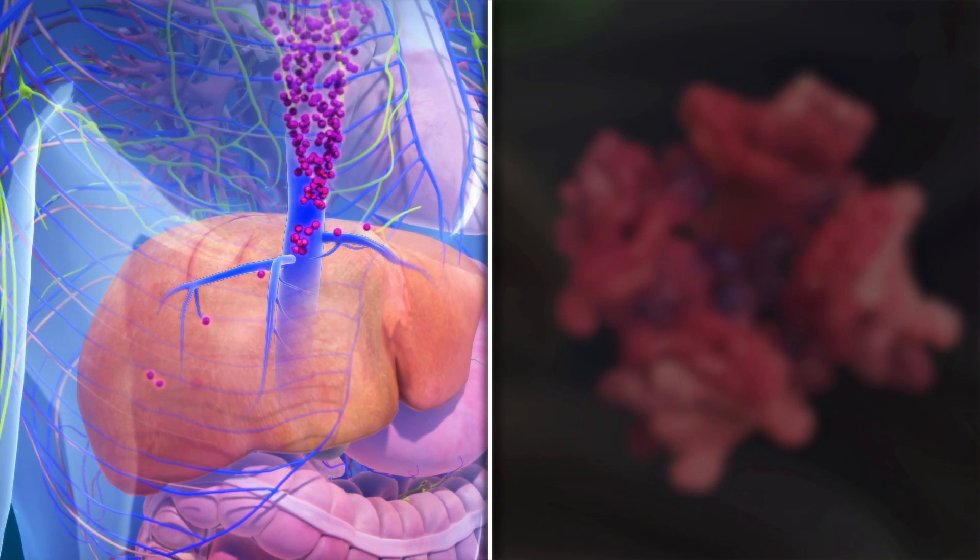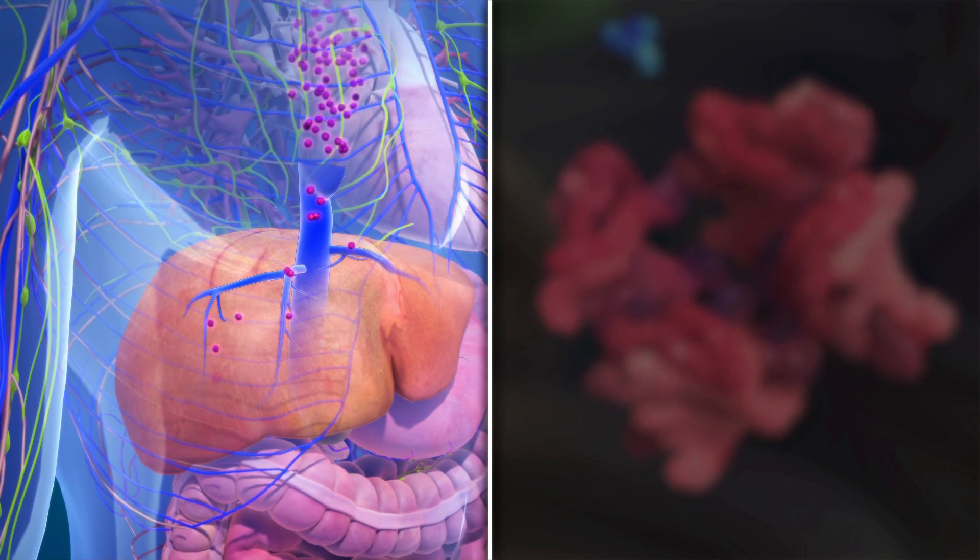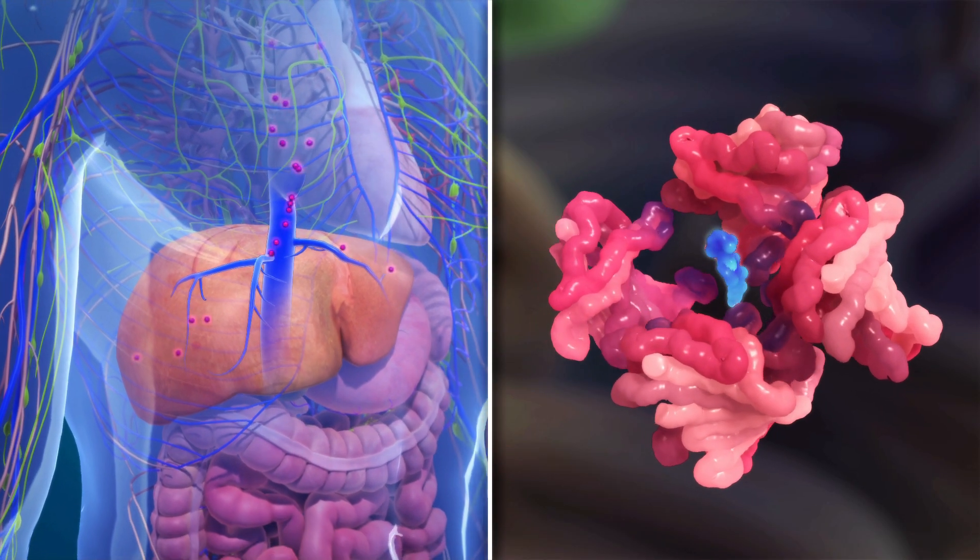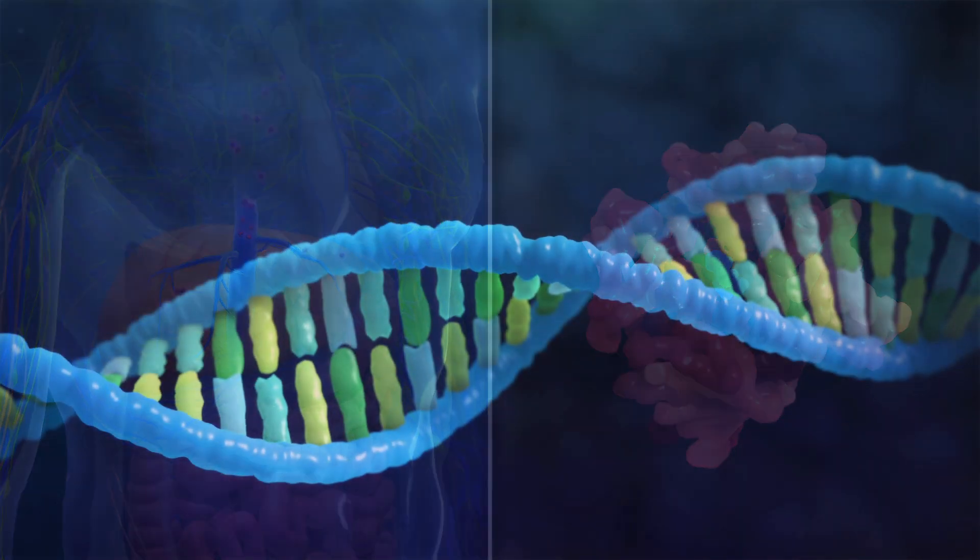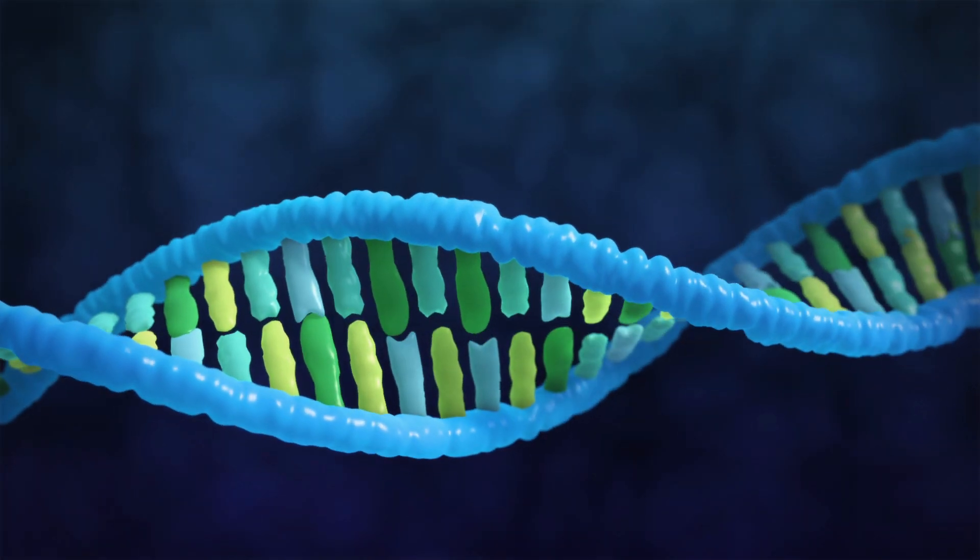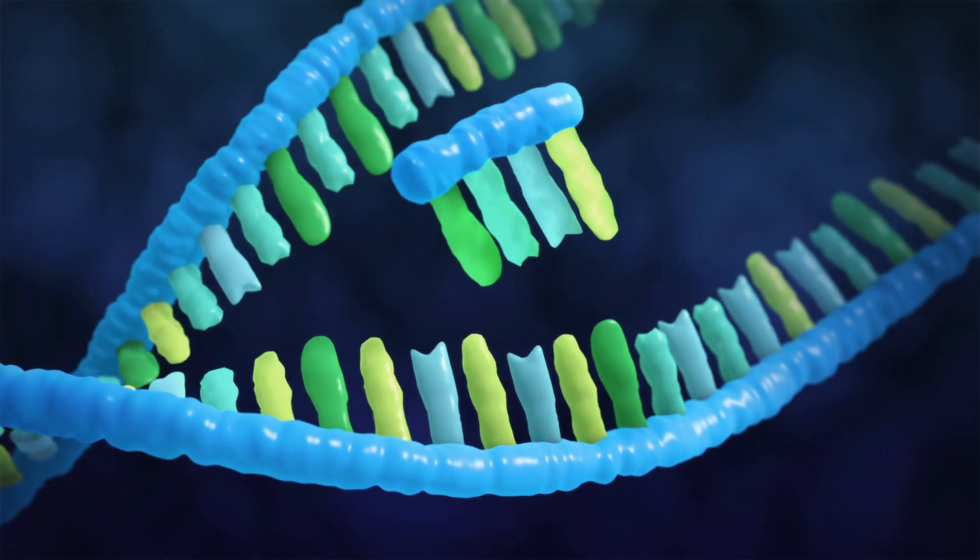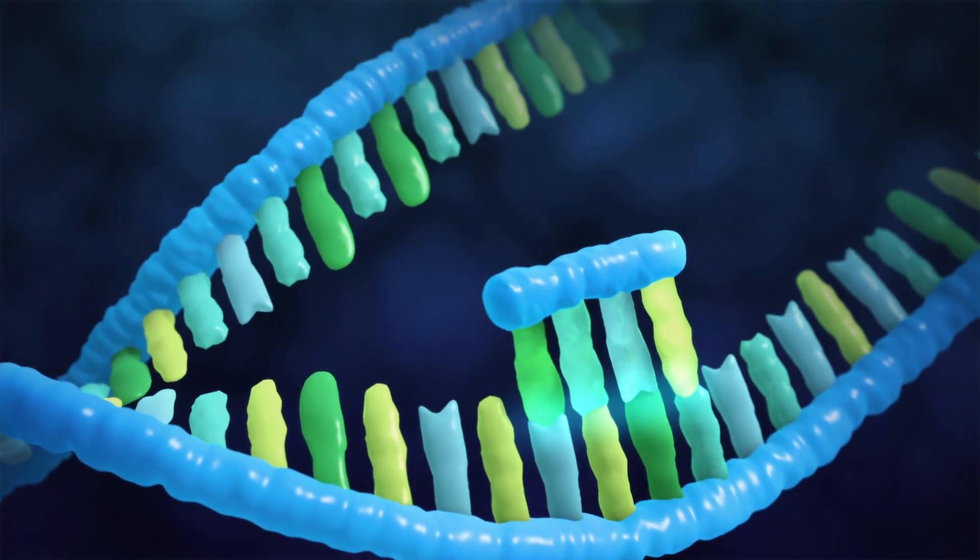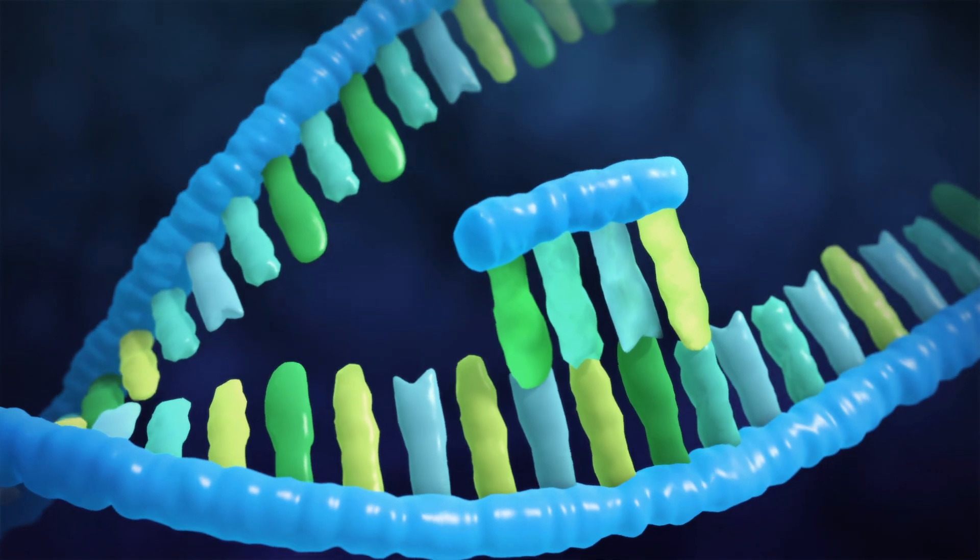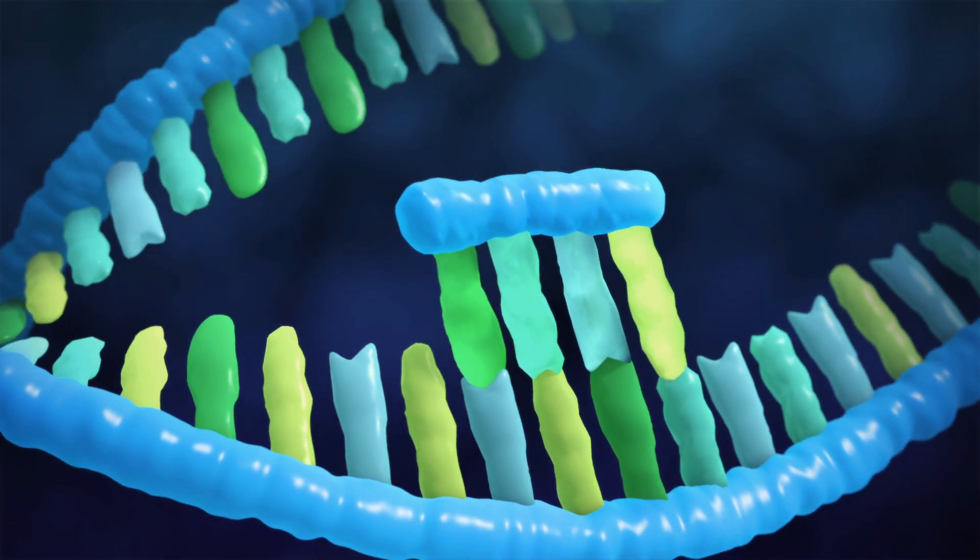Treatment is aimed at reducing TTR production or at stabilizing the four-unit complex. Until recently, a liver transplant was the only way to stop TTR being made, but novel treatments including gene silencing technology are being used as another way of stopping the body from producing TTR.